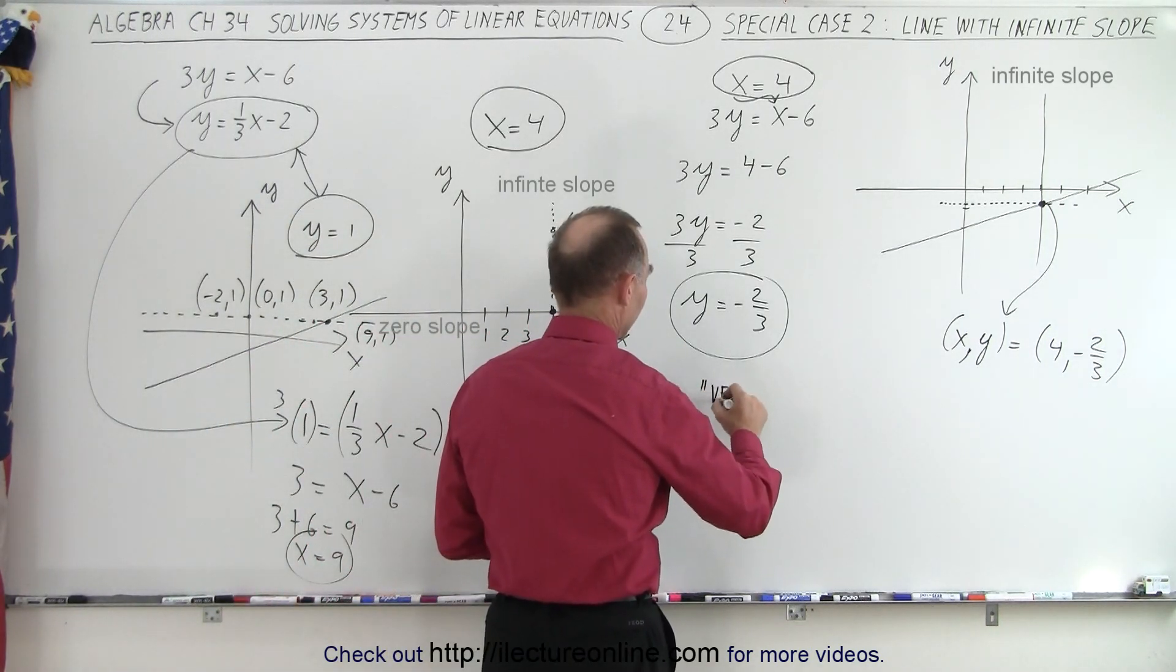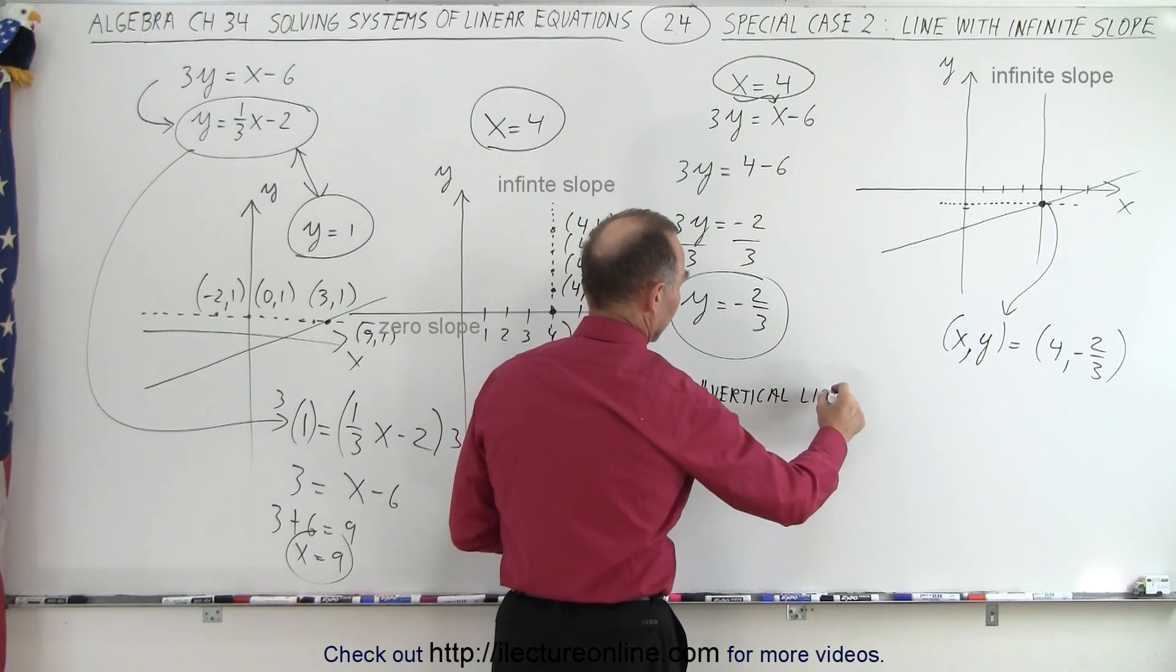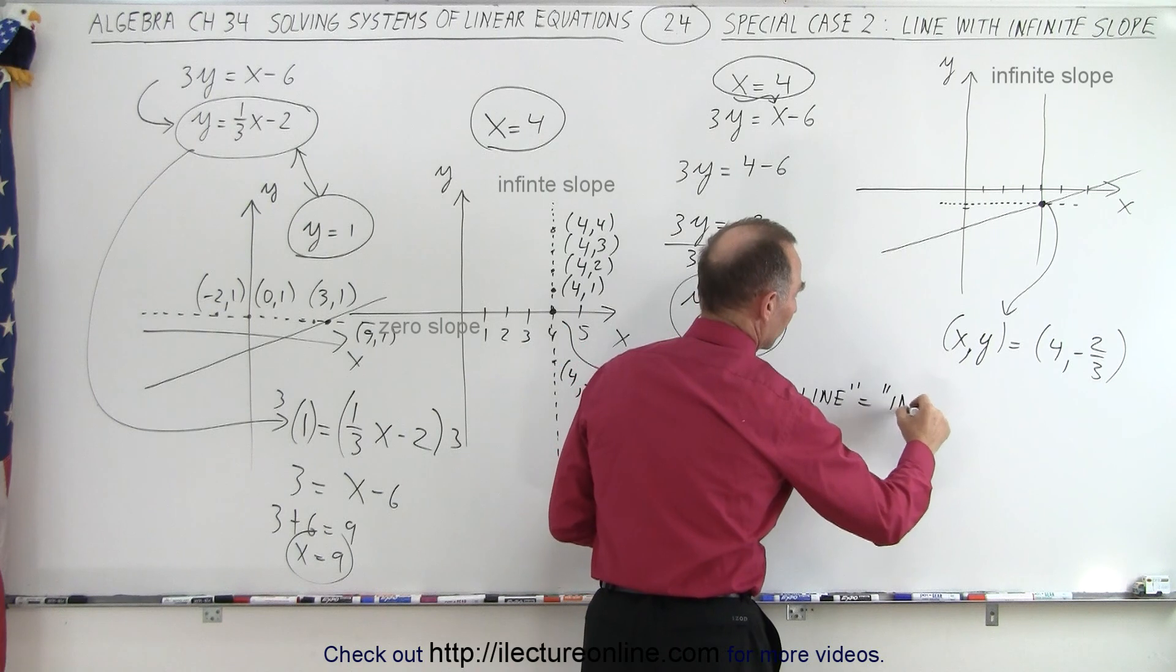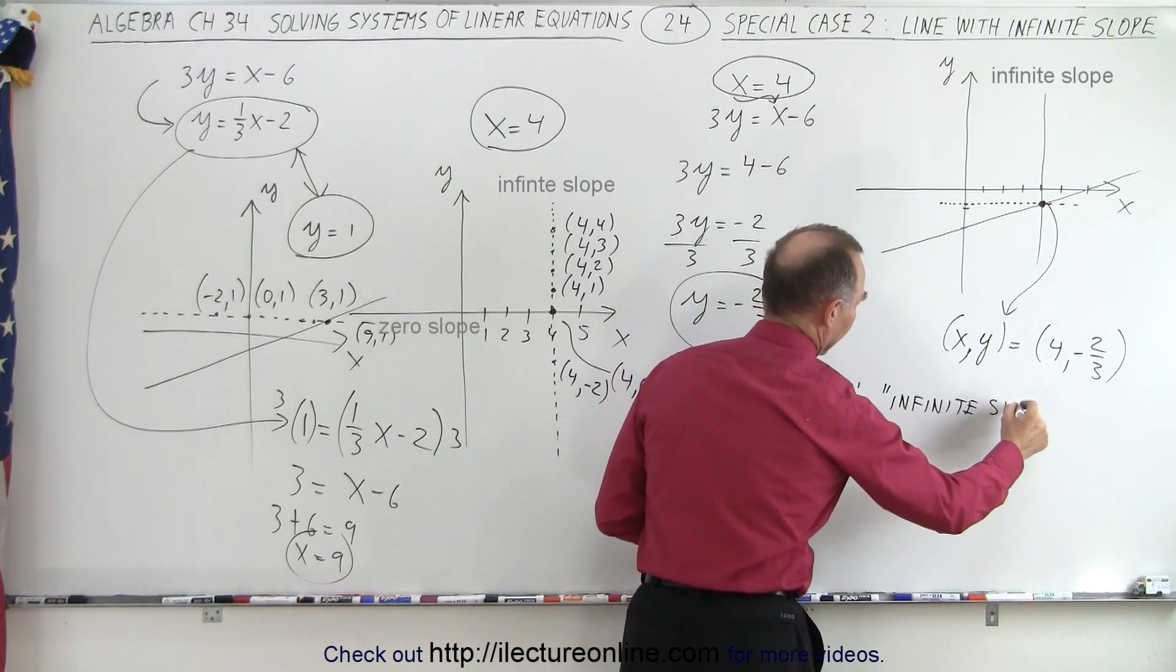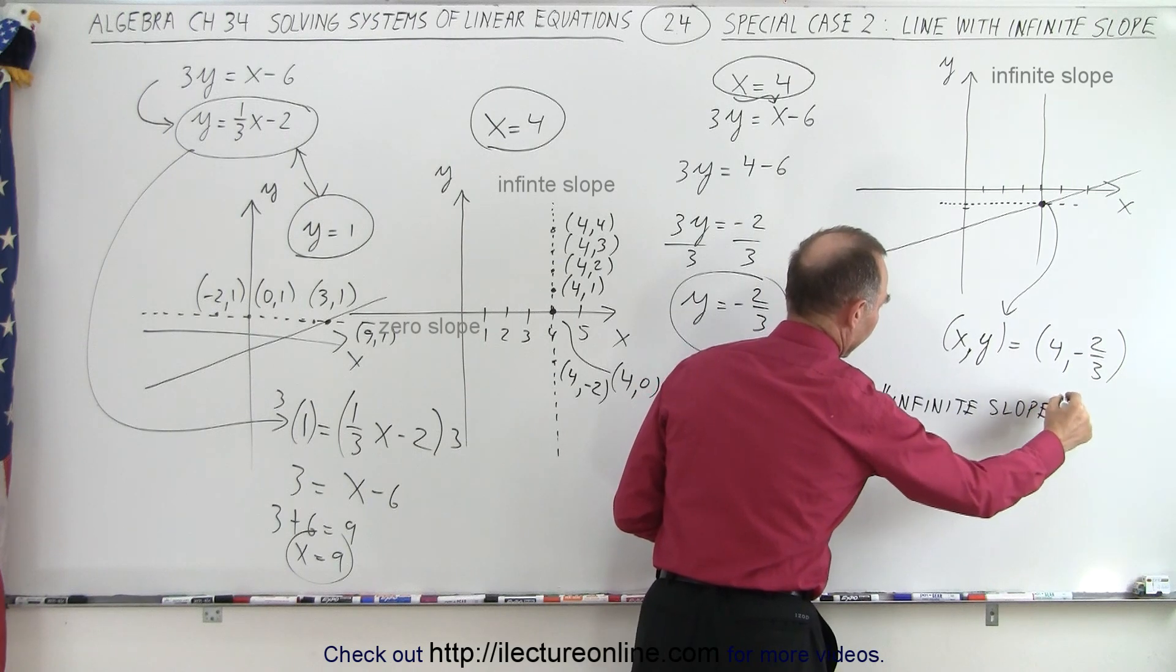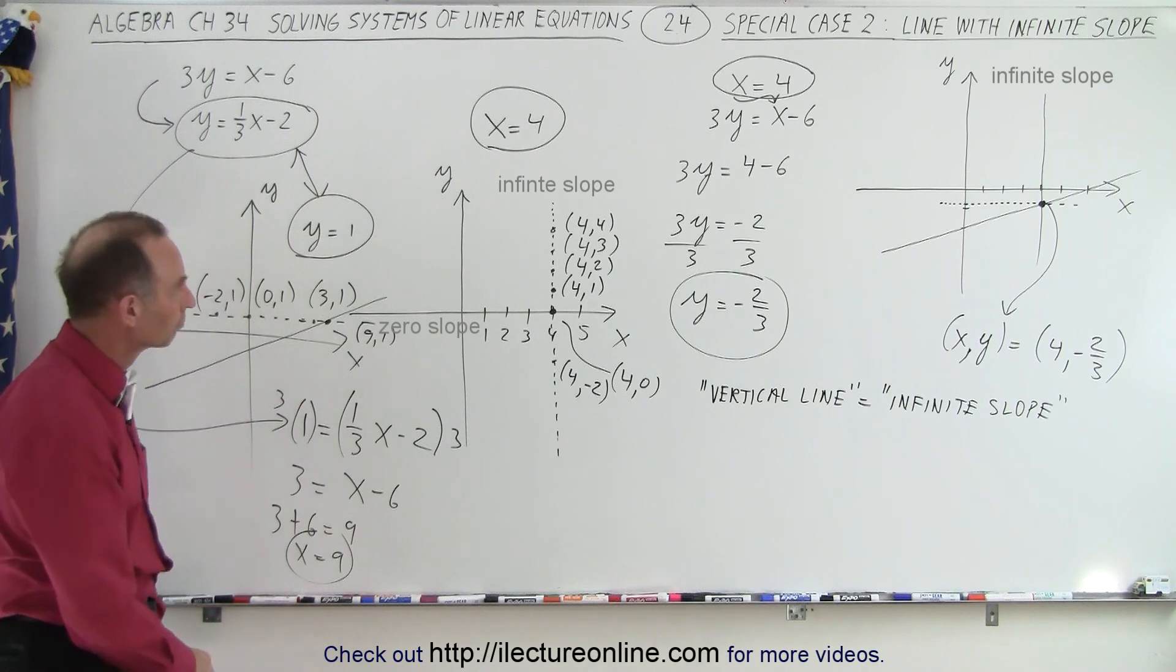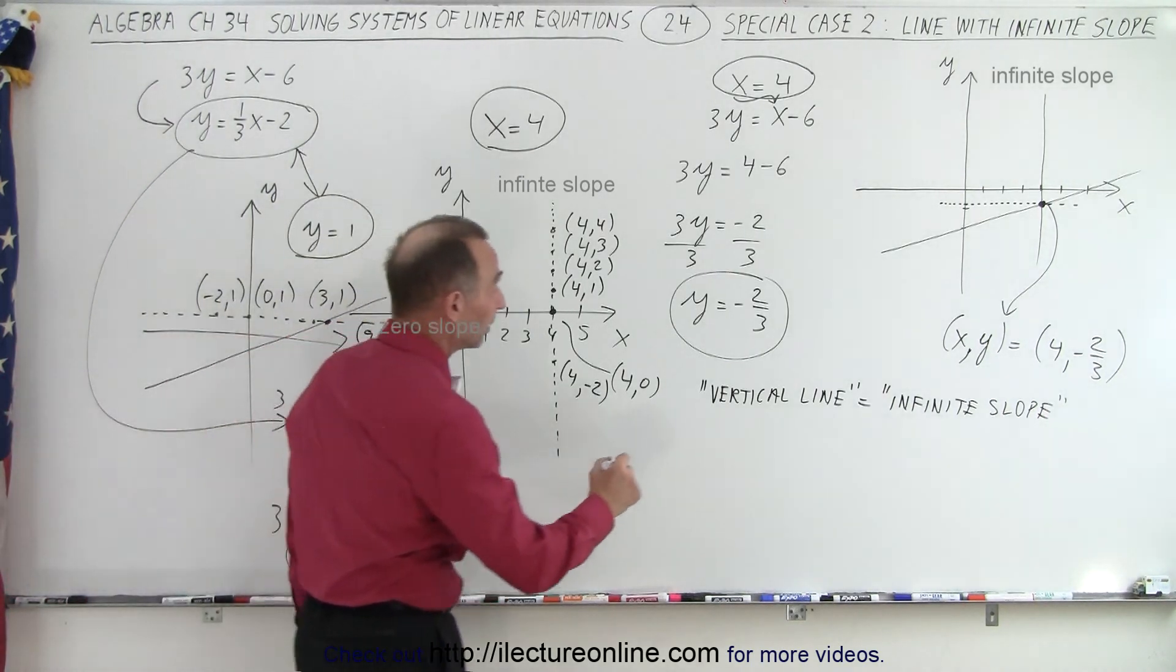So when you have something that says vertical line, that is synonymous to infinite slope. Yep. Horizontal lines have zero slope.